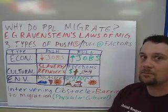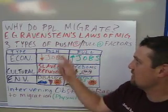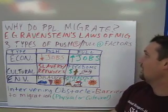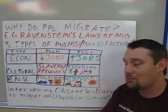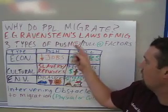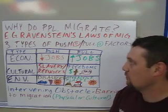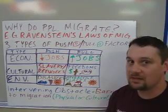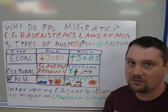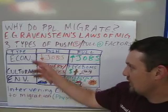So why do people migrate? There was a cartographer who lived in the 1800s — his name was E.G. Ravenstein. He was of German and English descent, and he came up with some laws of migration that are still important today. The first thing he came up with were three types of push and pull factors for migration. Push factors are bad things that push you out of a country. Pull factors are good things that pull you into a country. He had three main types.